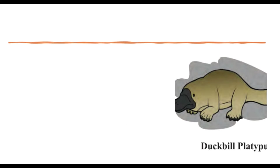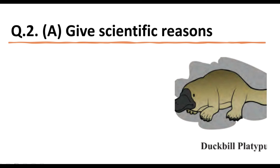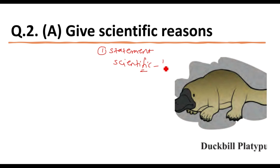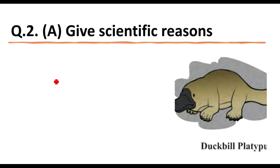Question two: Give scientific reason. When this question comes, students must follow certain rules. To get full marks, all statements you write must be scientific — the terminology must be scientific. Many times students write answers in natural language, but science is a special knowledge subject with its own terminology. You must use that terminology.